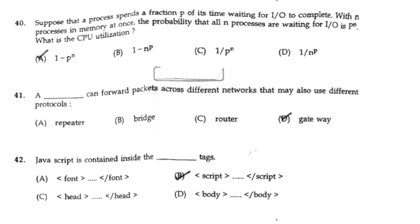A [blank] can forward packets across different networks that may also use different protocols. The answer is: gateway.